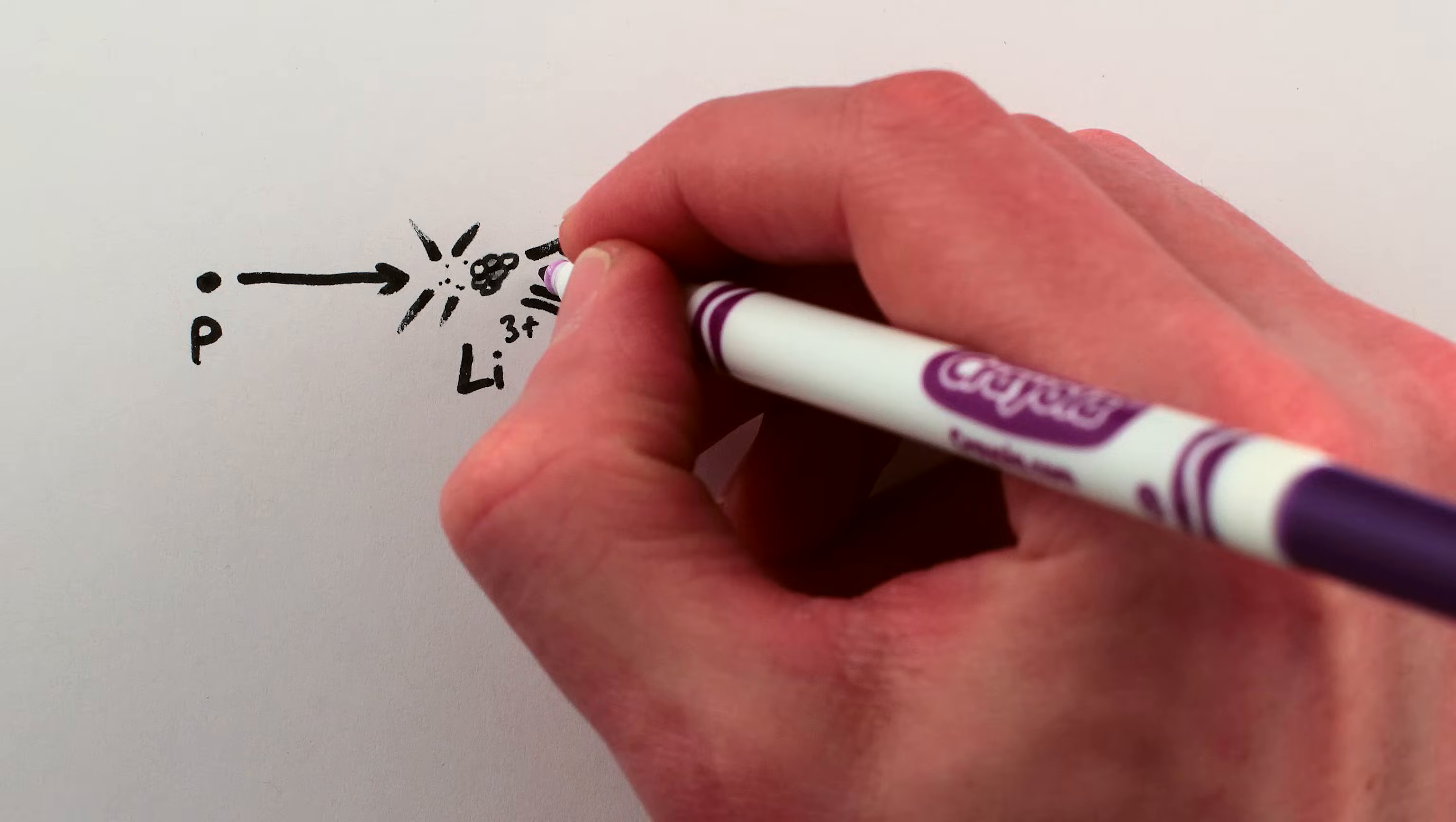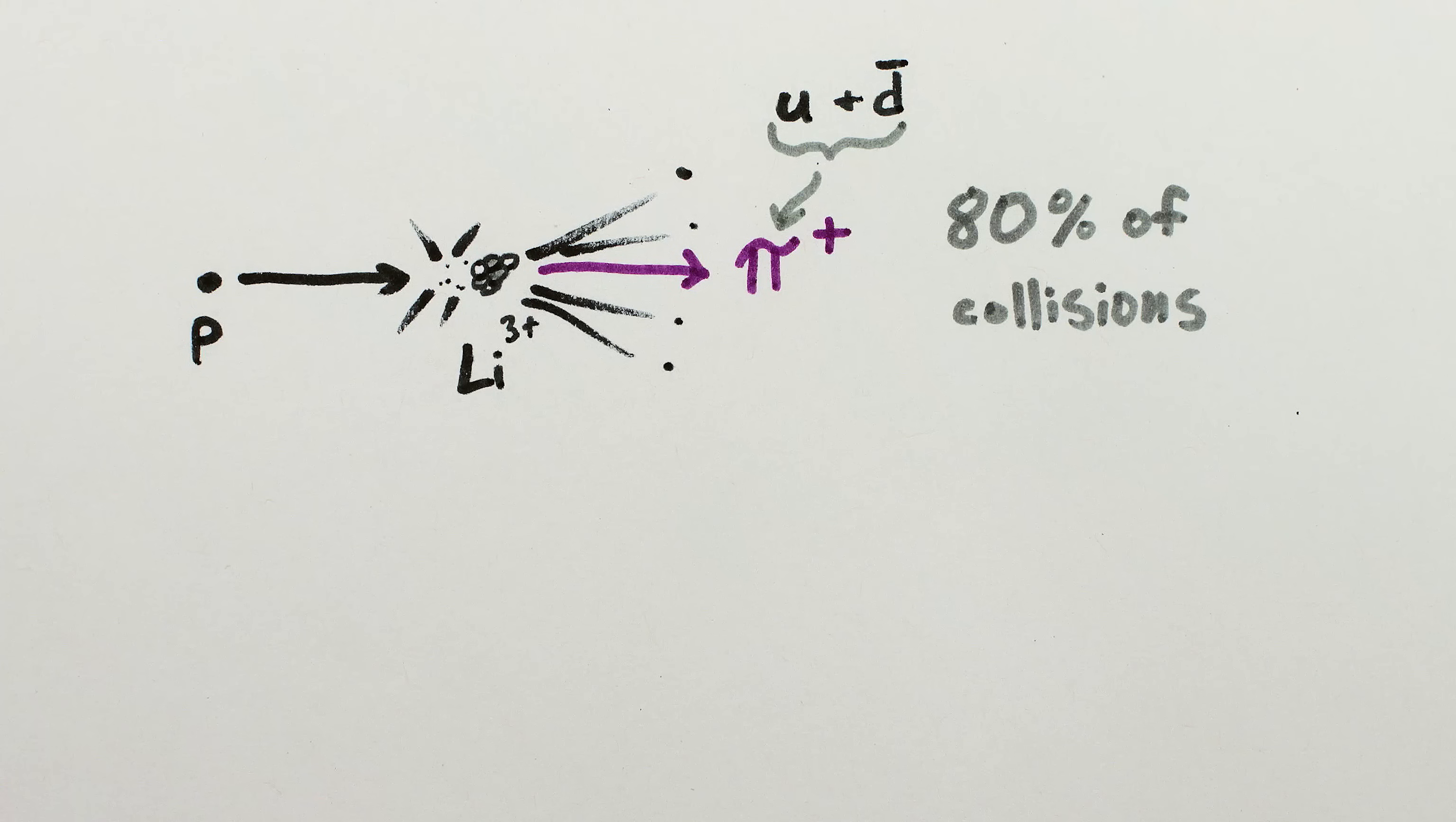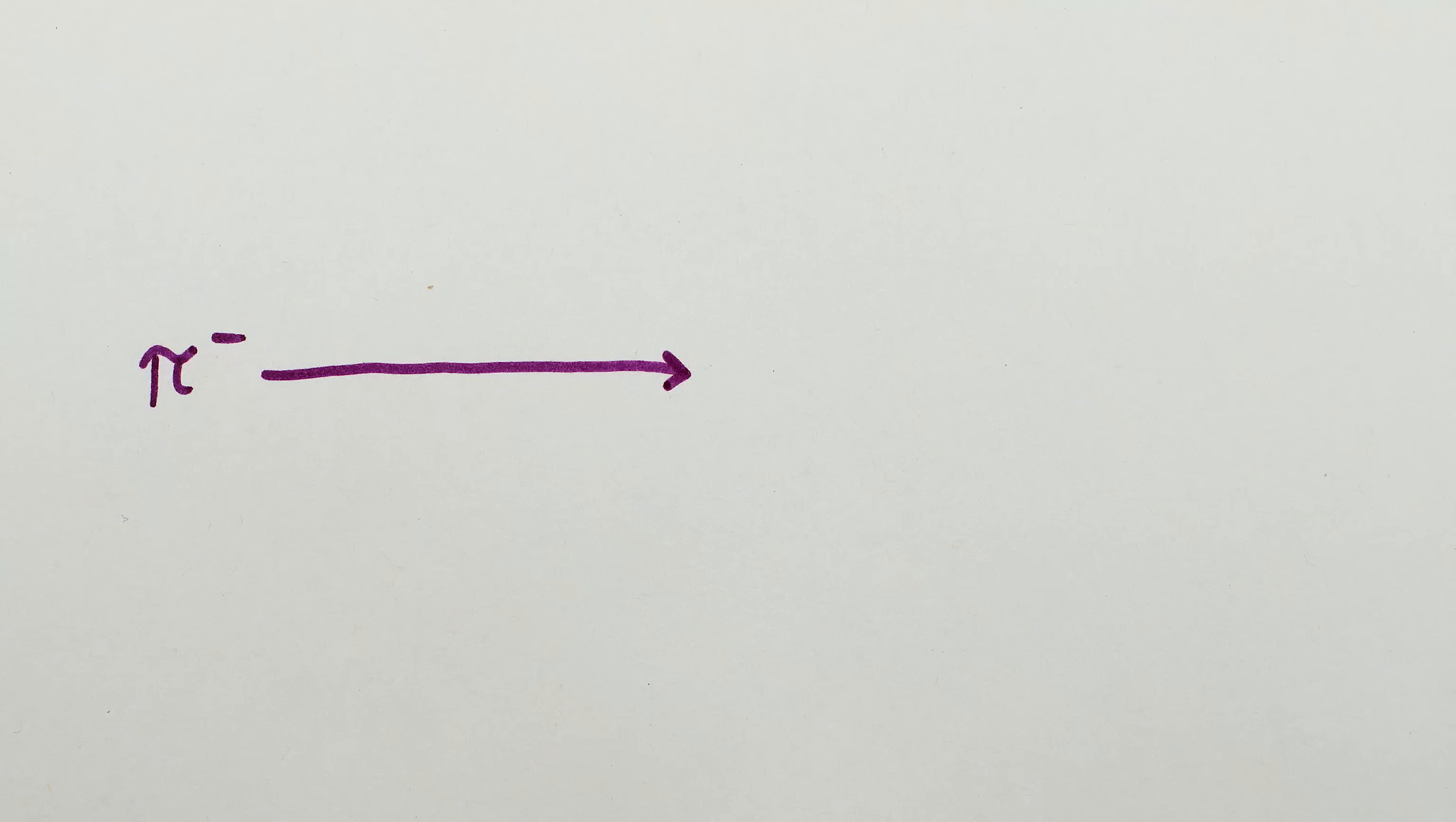The energy of the collision creates a whole mess of particles that goes flying out, but most importantly for our purposes, it creates a particle called a pion – either a pion with a positive electric charge made from an up quark and an anti-down quark, or a pion with negative electric charge made of a down and anti-up quark.